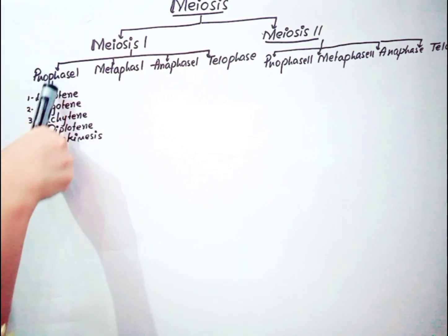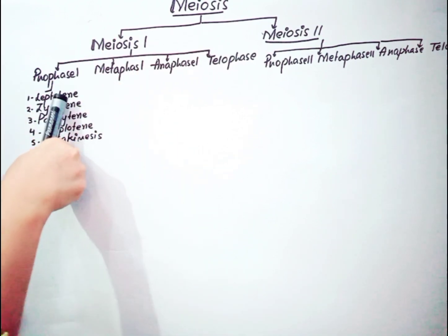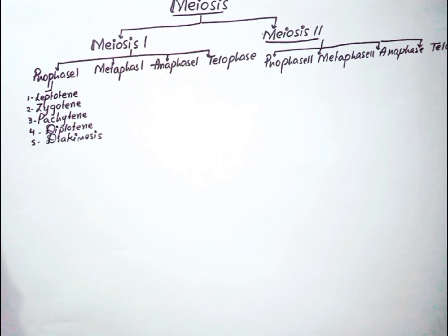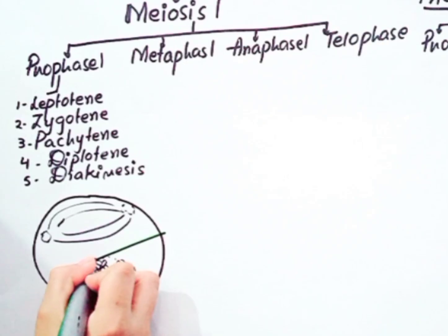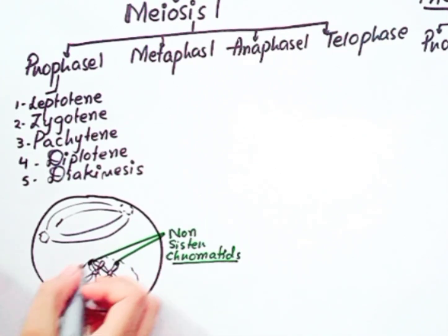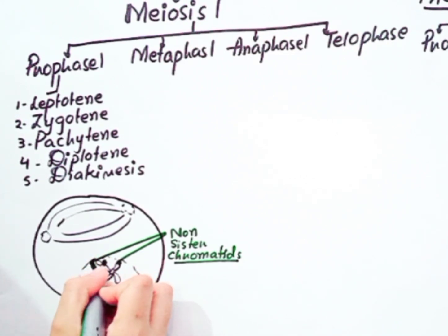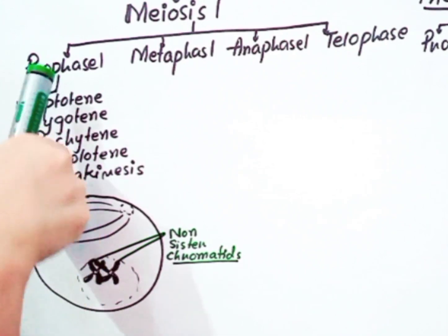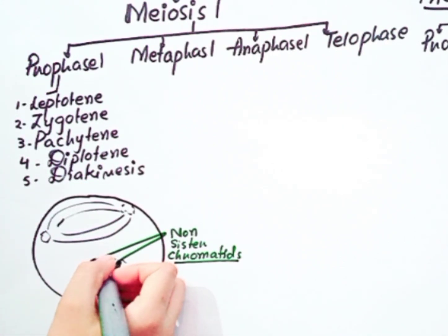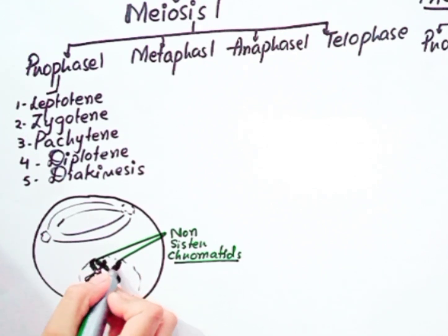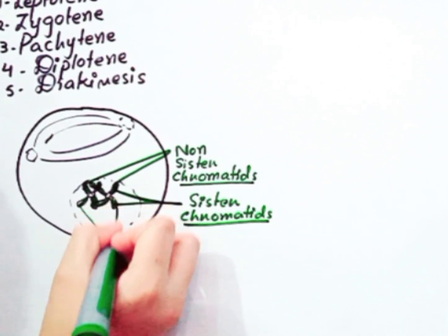Prophase 1 is the longest phase in meiosis 1 and a very important phase because it increases genetic variation, as the exchange of DNA between homologous chromosomes occurs during this stage. This process is called homologous recombination and crossing over. In this diagram, you can see the homologous chromosomes — the separate chromatids of homologous chromosomes are called non-sister chromatids, and this structure is called a tetrad.